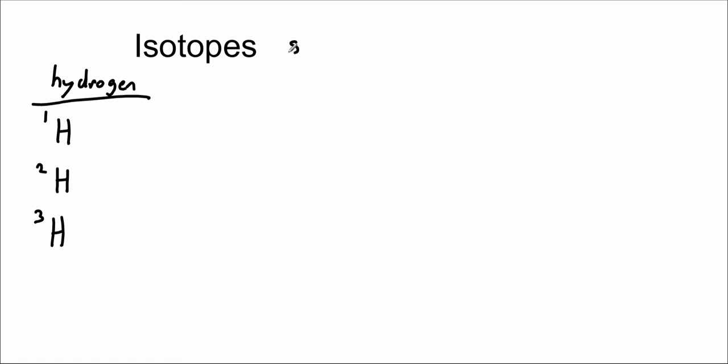So isotopes are the same element—and of course we can just say that's the same as saying it's the same number of protons—but different masses. Why different masses? Because different number of neutrons.